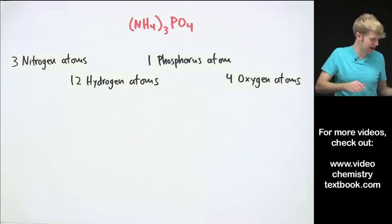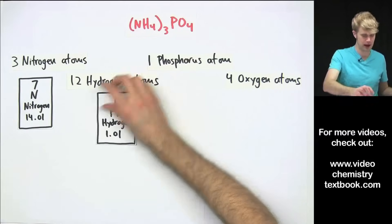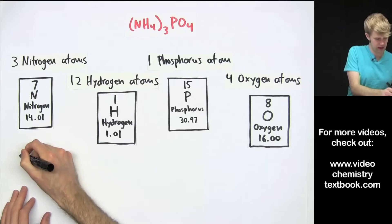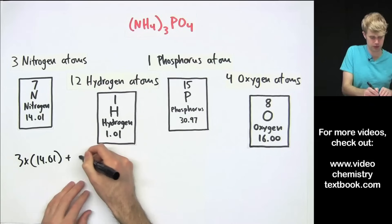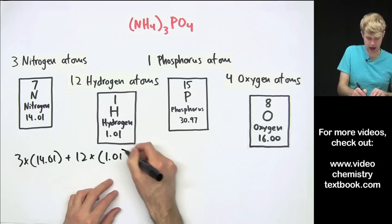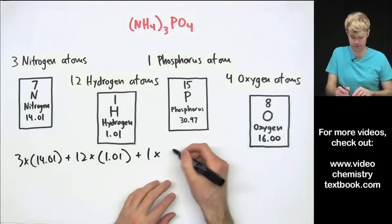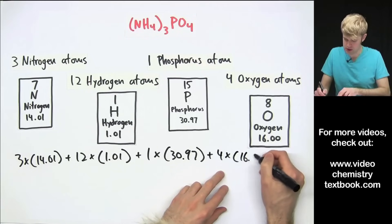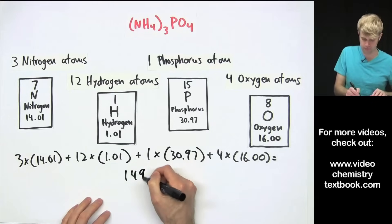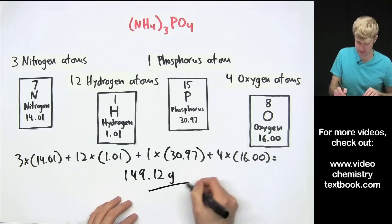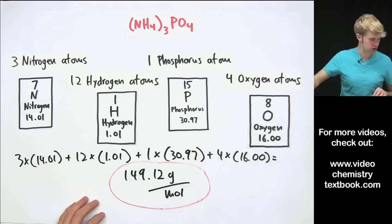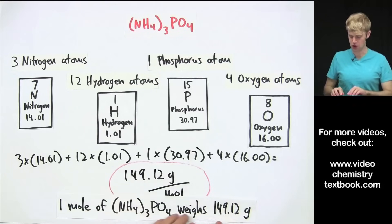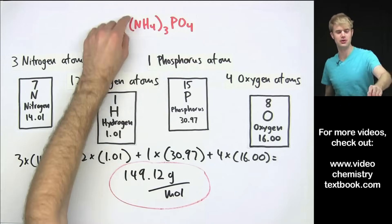We look up nitrogen, hydrogen, phosphorus, and oxygen on the periodic table and do the math: three times 14.01, plus 12 times 1.01, plus one times 30.97, plus four times 16.00. We end up with 149.12 grams per mole, meaning one mole of (NH₄)₃PO₄ weighs 149.12 grams.